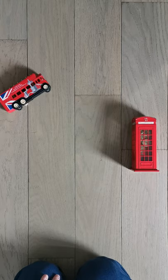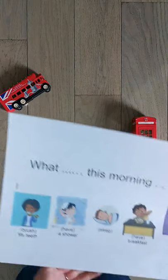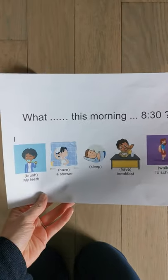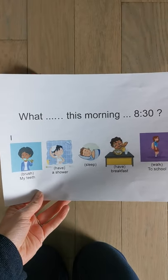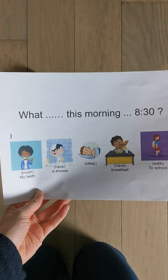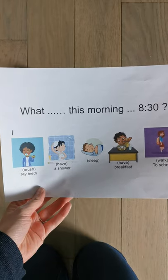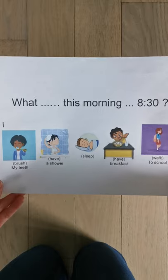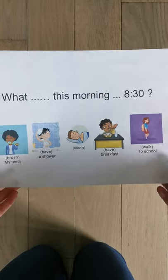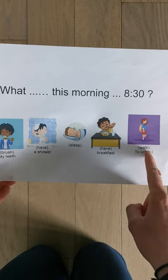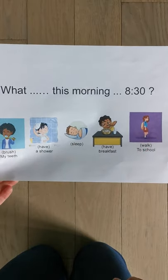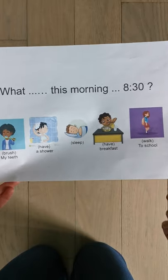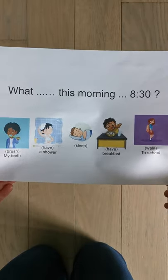Et pour commencer à préparer tout le vocabulaire, les structures, etc., on s'aide de cette fiche : « What were you doing this morning at 8:30 or half past 8? » — Que faisiez-vous ce matin à 8h30 ? Donc, dans mon exemple : I was walking my son to school — j'emmenais mon fils à l'école en marchant.